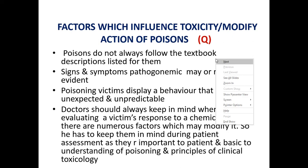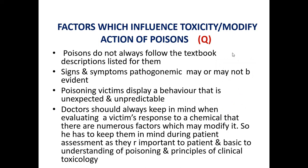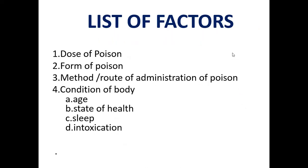The following is the list of factors: number one, dose of a poison; number two, form of poison; number three, method or route of administration of poison; number four, condition of the body — which is further divided into: A) age, B) state of health of patient, C) sleep, and D) intoxication. The first two factors are related to the poison or chemical, and the other factors are mostly related to the person, patient, or victim.